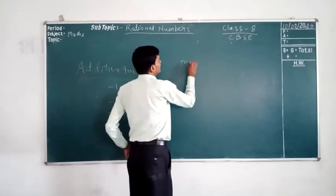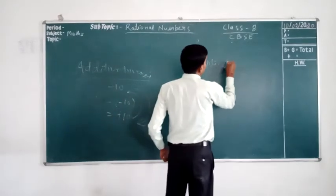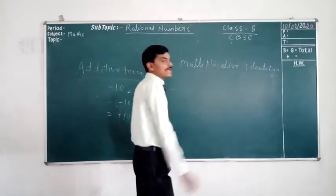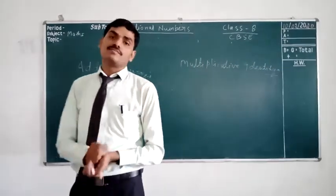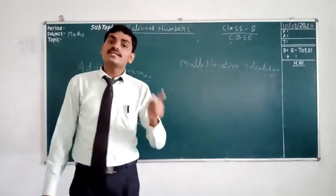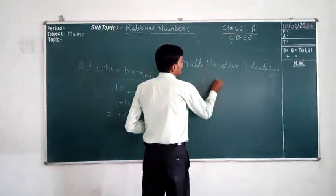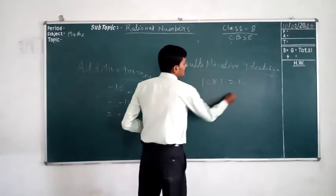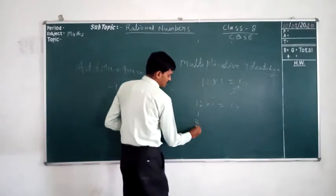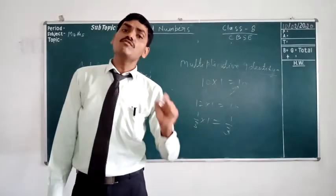Now come for the multiplicative identity. If we multiply 1 by any number, then we get the same number. So we can say that 1 is the multiplicative identity. For example, 10 × 1 = 10, 12 × 1 = 12, and 1/3 × 1 = 1/3. That is, 1 is known as the multiplicative identity.